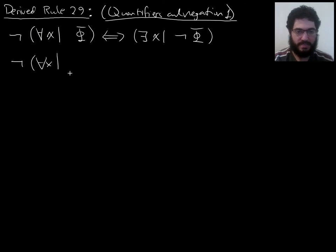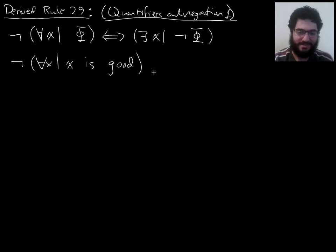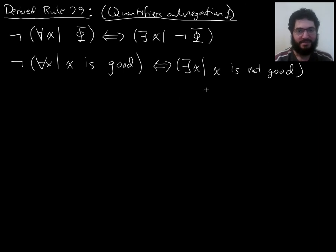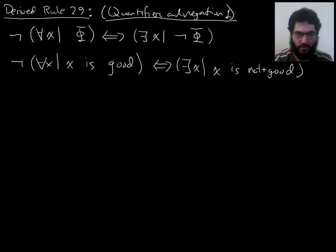So I'm going to replace phi by 'x is good', so then not-phi becomes 'x is not good'. All I've done here is rewritten the derived rule, so I'm going to write it like this rather than the first line. This double arrow here is what we're going to prove.